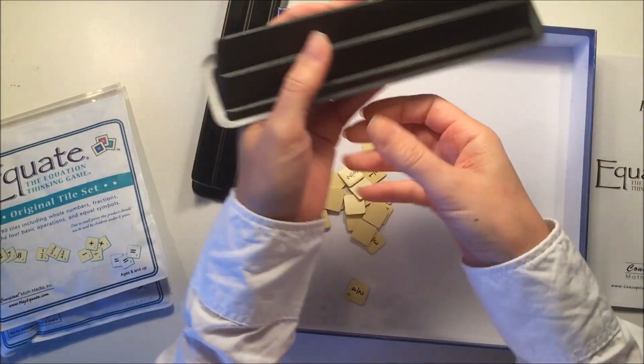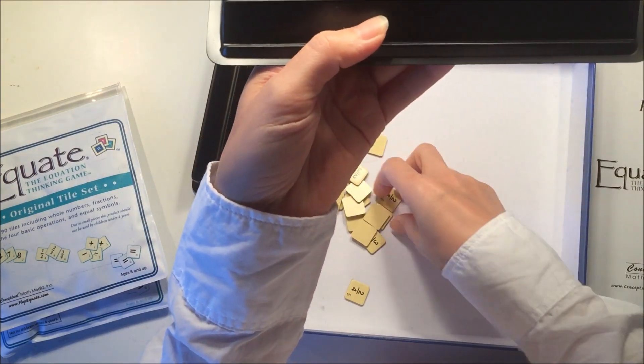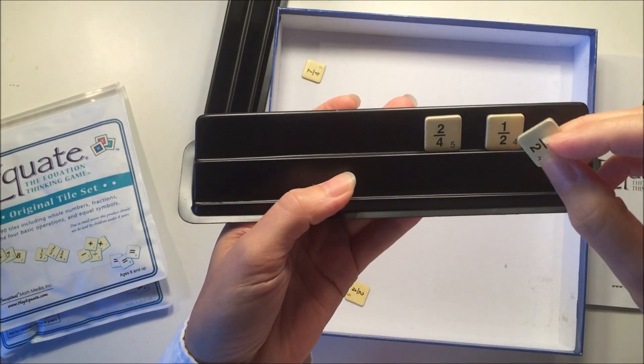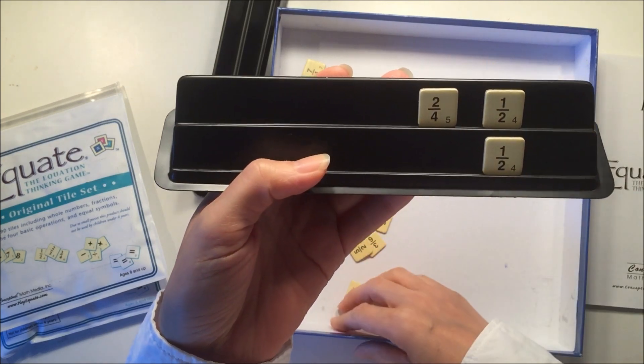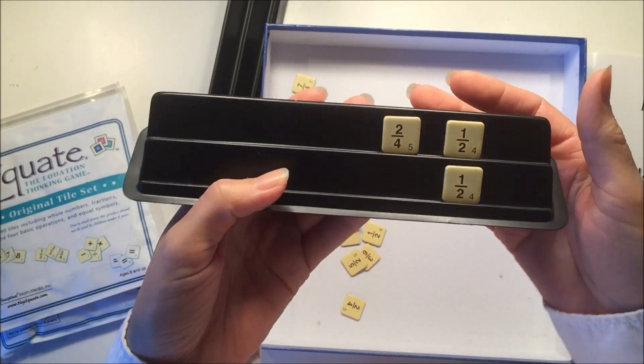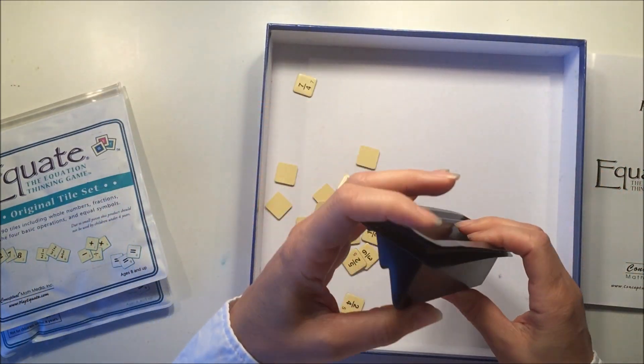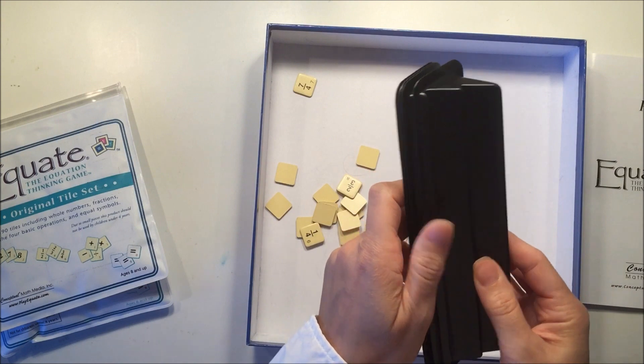You get these little plastic trays to hold your tiles on when you're trying to shuffle them around and make equations, but I find it easier just to work on the table so we don't actually use these. We don't hide our tiles from other players. We just keep it on the table and shuffle them around.